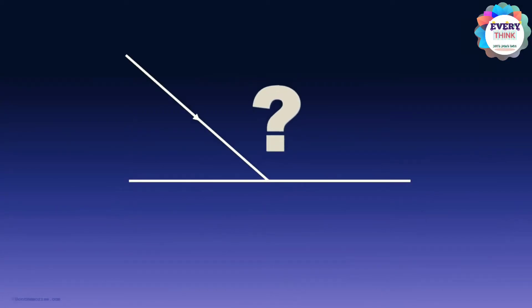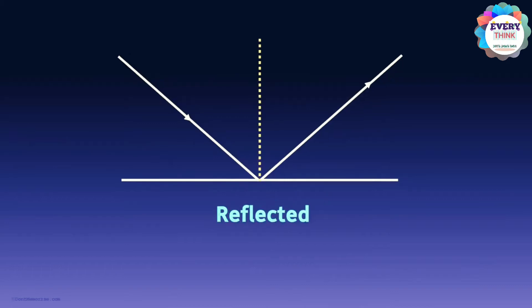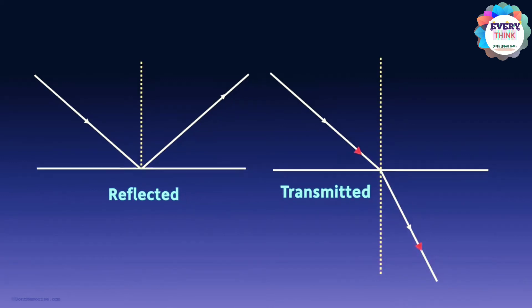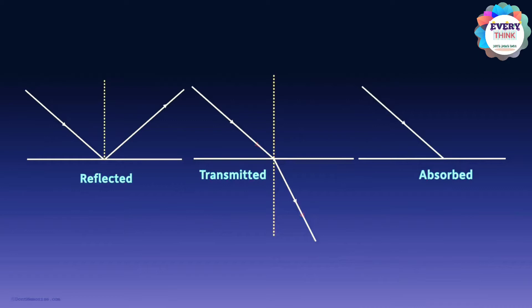What can happen when a beam of light is incident on the surface of any object? When a light beam is incident on the surface of any object, a part of the light can be reflected, a part can be transmitted — that is, it may pass through the object and come out the other side — and a part of the light can also be absorbed by the object. The amount of light reflected, absorbed, or transmitted depends on the material that the object is made up of.